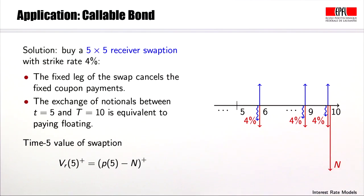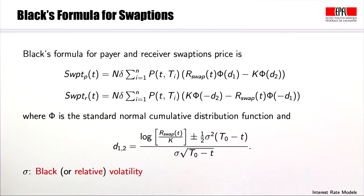Here is Black's formula for payer and receiver swaptions, where capital Phi denotes the standard normal cumulative distribution function and the parameters d1 and d2 are given here.